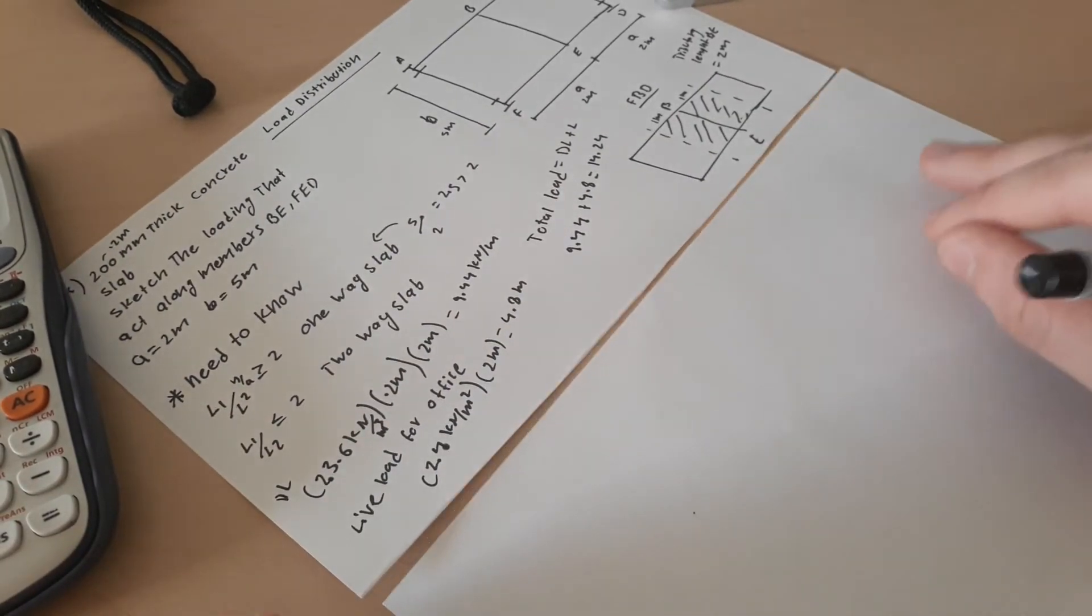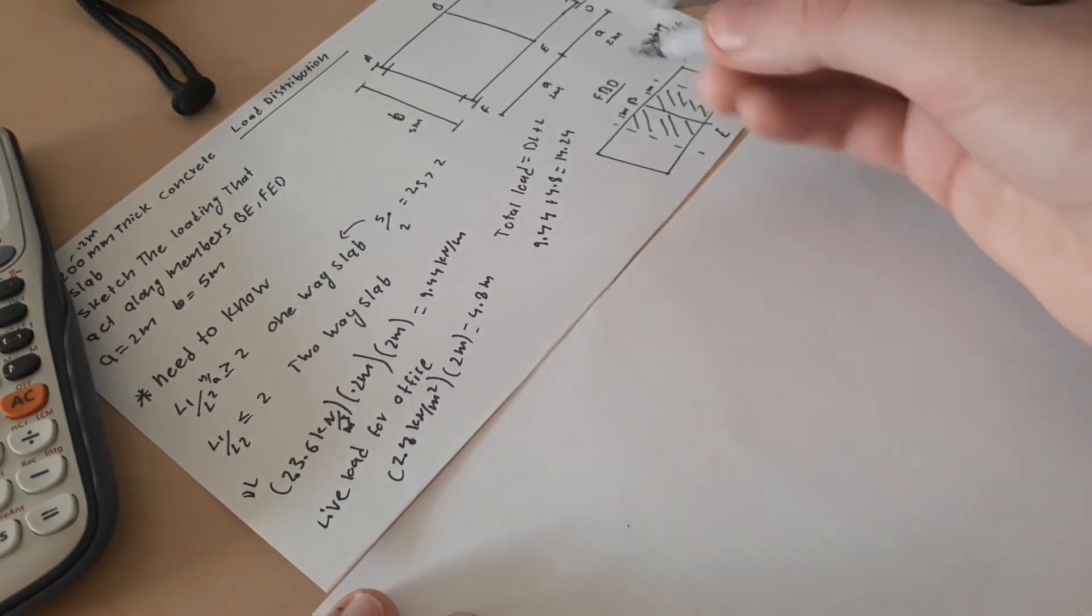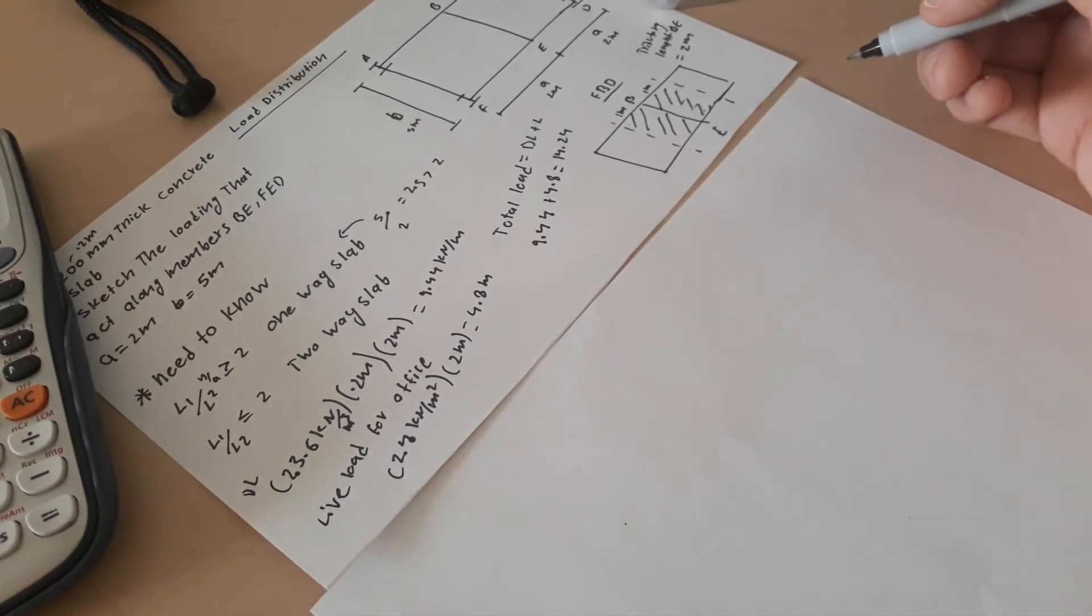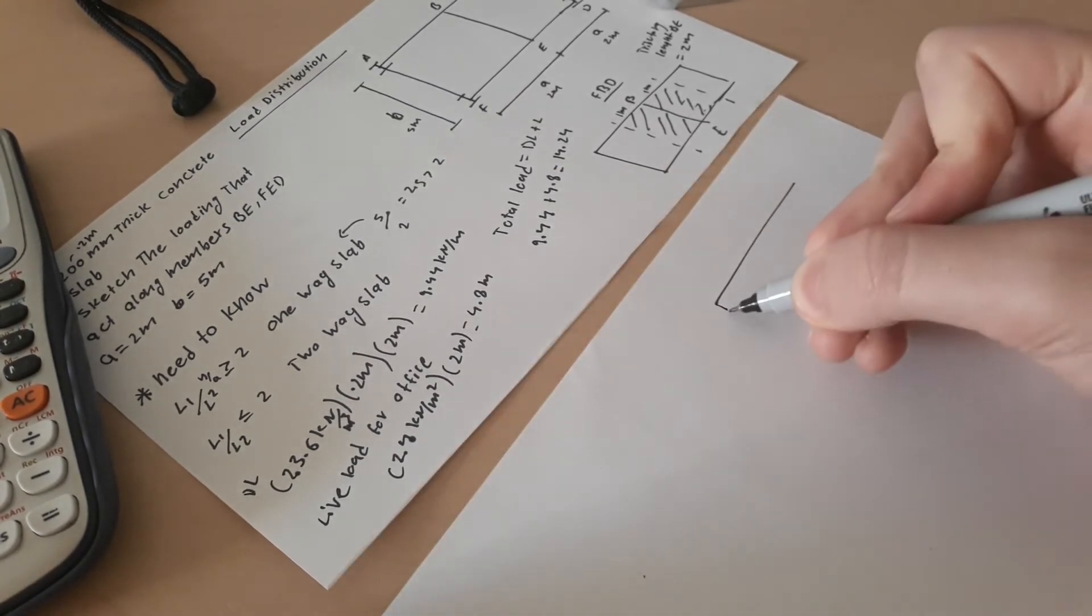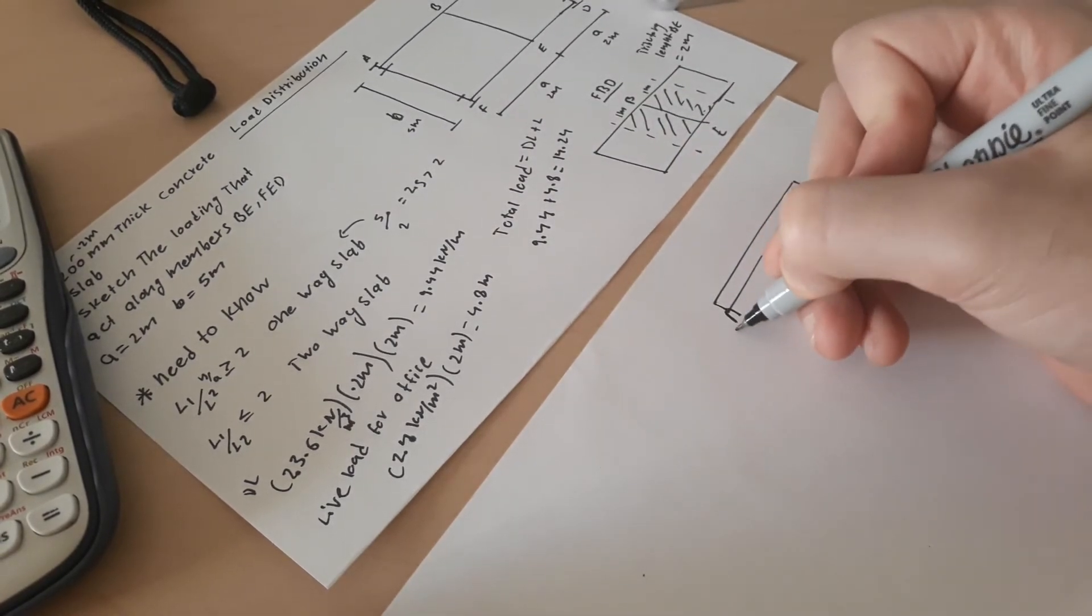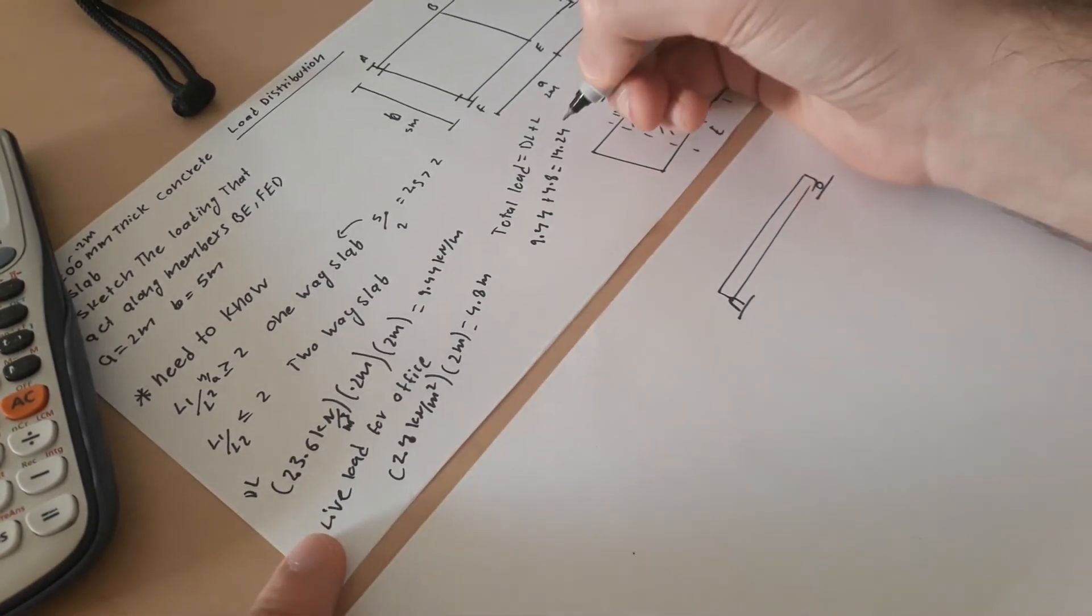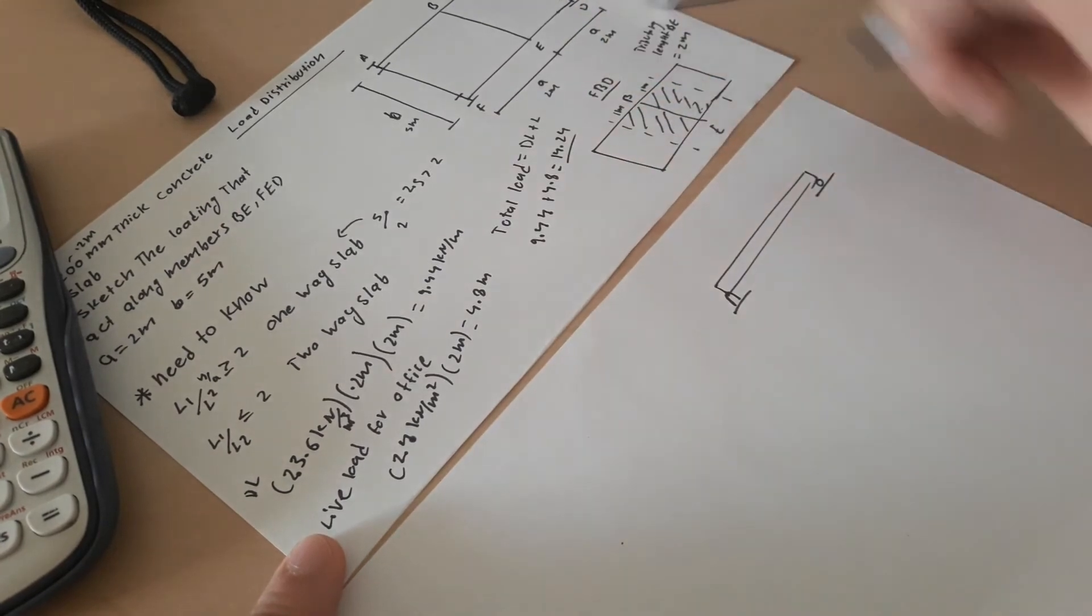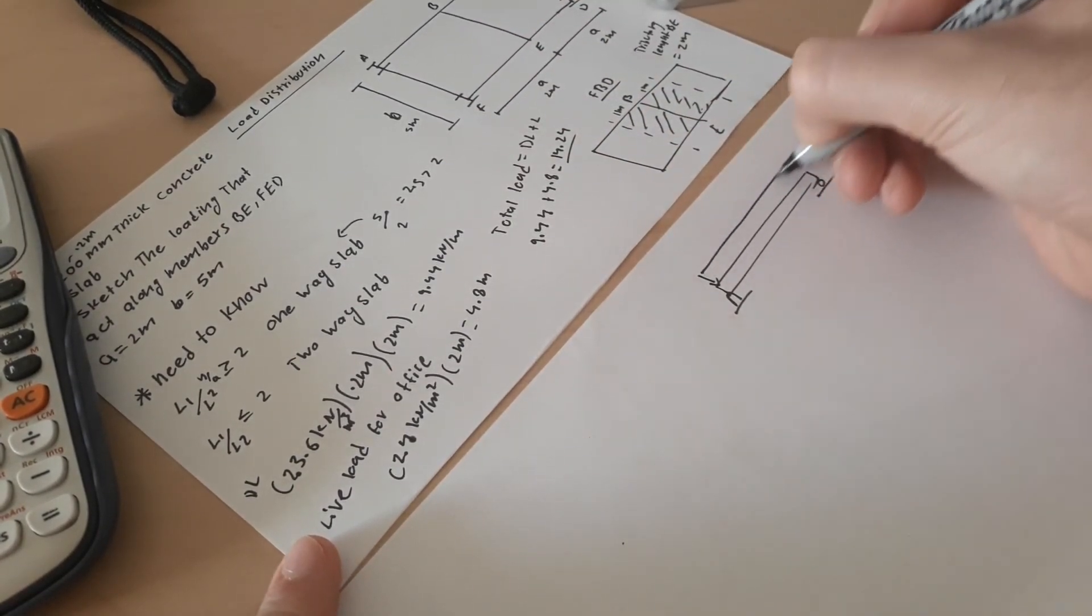So we need to sketch it along. Always for this type of problem, draw it like this. So you draw a beam for BE, and on one side draw a pin, and on one side draw a roller. So right here was 14.24 kilonewton per meter, is a distributed load along this.